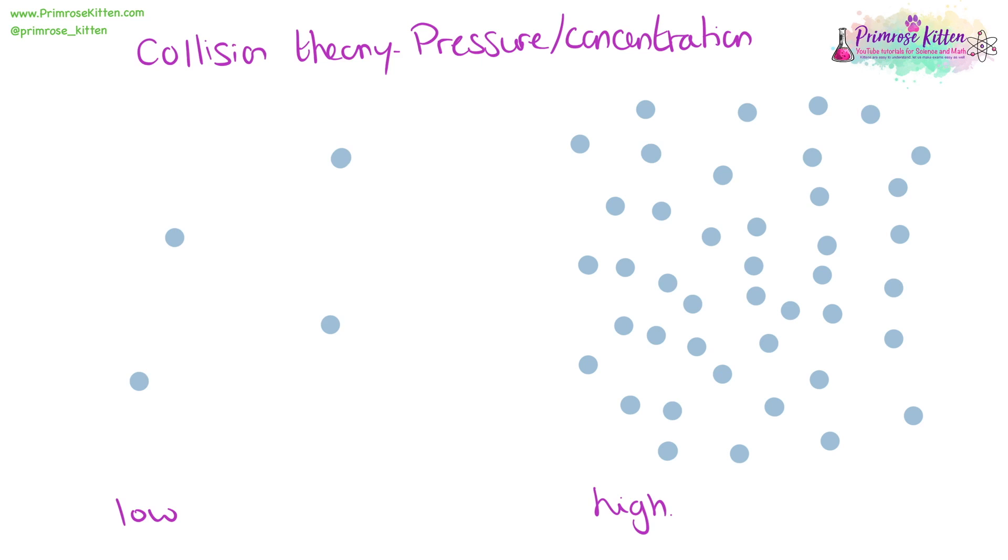If we have things at high pressure or at a high concentration, there are more of them, which means they're much more likely to bump into each other and react. Whereas at a low concentration, they're not very likely to bump into each other and react.